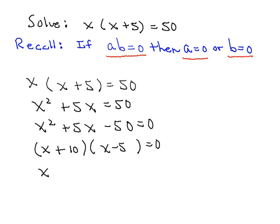Then we'll set each factor to zero. So we have x plus 10 is equal to zero, or x minus 5 is equal to zero.